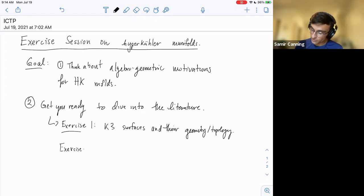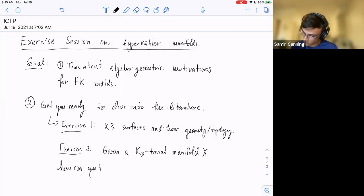And so I thought that was a pretty cool exercise to start with. And the second exercise is more challenging, I think it's quite fun. So the theme of the exercise is: given a KX-trivial manifold, a manifold with trivial canonical divisor, how can you tell if it's hyperkähler?